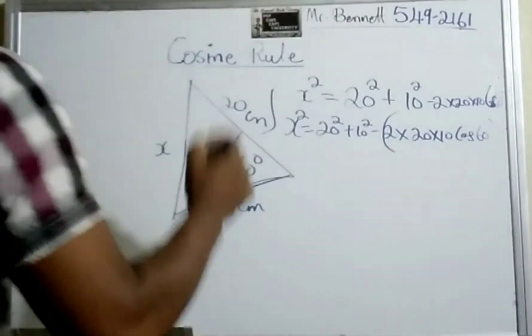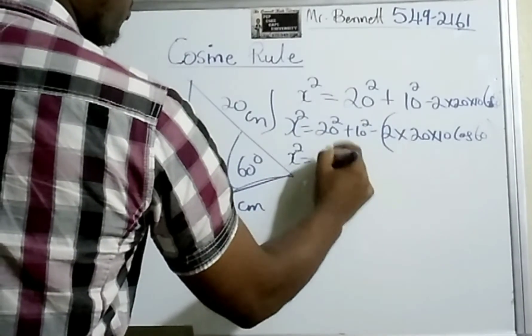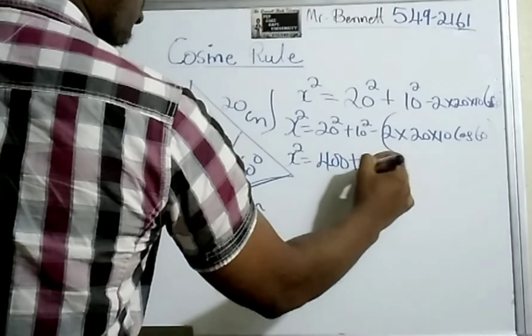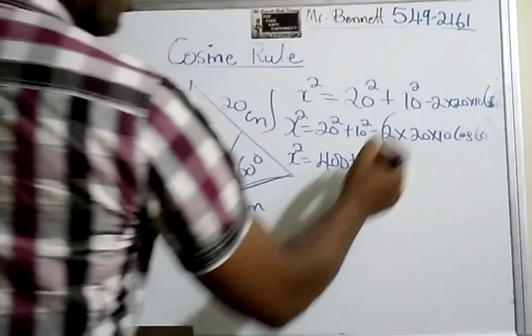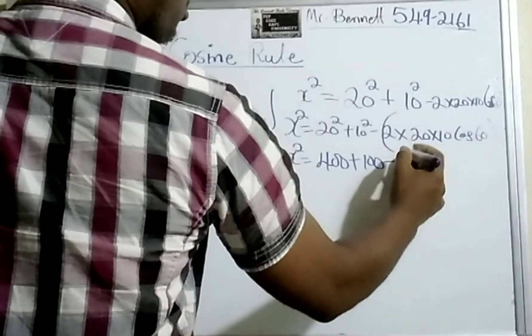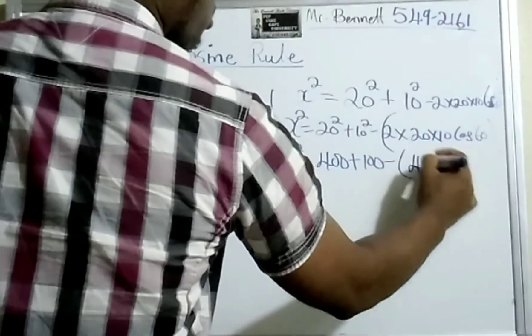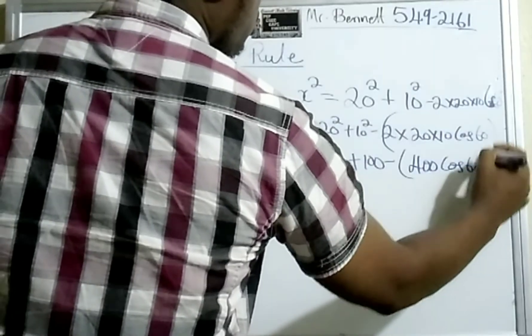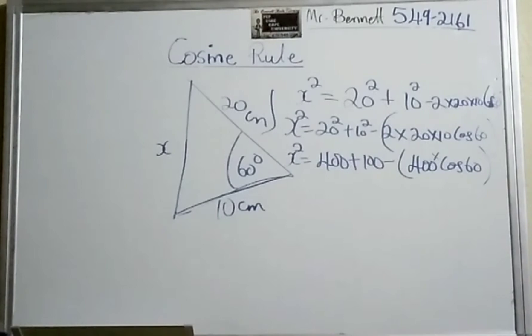Let us tidy it up now. x² = 20² (that's 400) plus 100 minus—we are going to do the bracket first—2 × 20, that would be 40, times 10 would be 400 times cos 60.